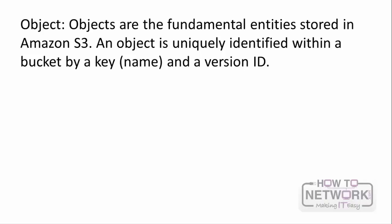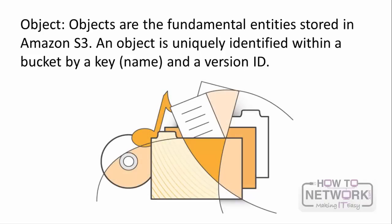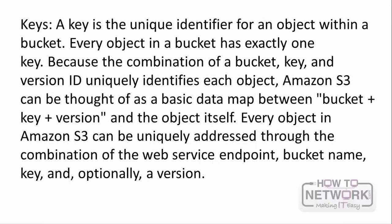Objects are the fundamental entities stored in Amazon S3. An object is uniquely identified within a bucket by a key name and a version ID. A key is the unique identifier for an object within a bucket, and every object in a bucket has exactly one key. Because the combination of bucket, key, and version ID uniquely identifies each object, Amazon S3 can be thought of as a basic data map between bucket plus key plus version, and the object itself.